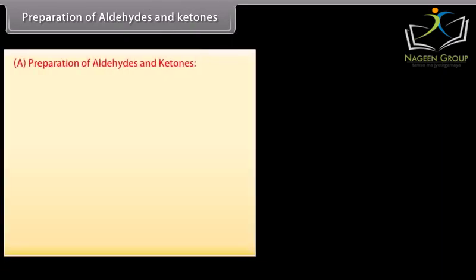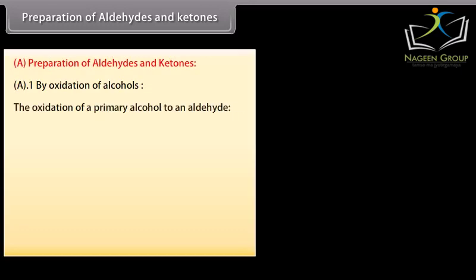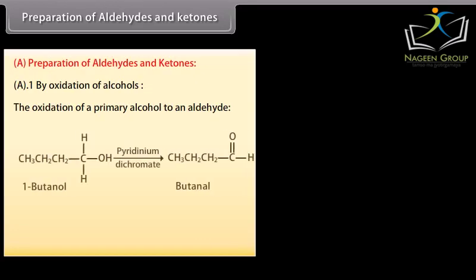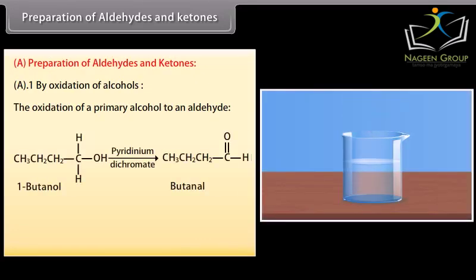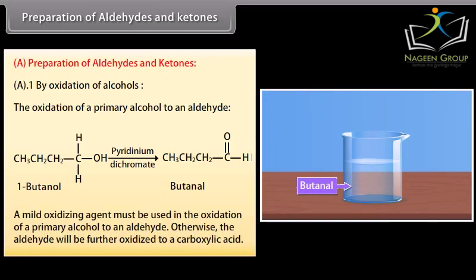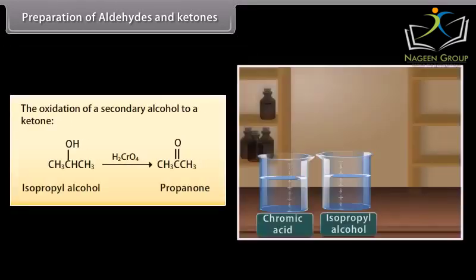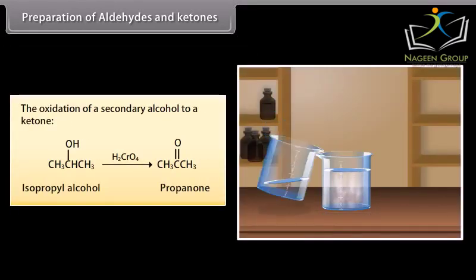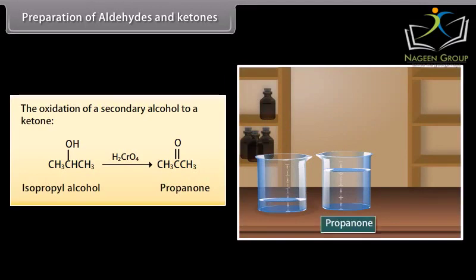Preparation of aldehydes and ketones. By oxidation of alcohols: the oxidation of a primary alcohol to an aldehyde — butanol is oxidized in the presence of pyridinium dichromate and forms butanal. A mild oxidizing agent must be used in the oxidation of a primary alcohol to an aldehyde; otherwise, the aldehyde will be further oxidized to a carboxylic acid. The oxidation of a secondary alcohol to a ketone: on adding chromic acid to isopropyl alcohol, it forms propanone, which is a ketone.